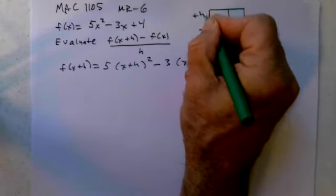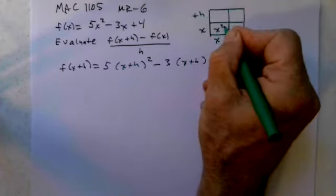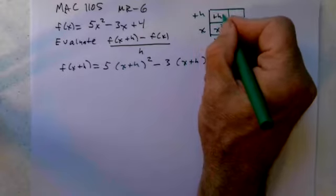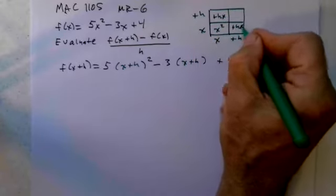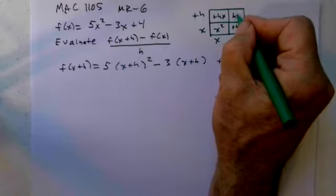Here's x plus h, x plus h. x times x is x squared. x times h plus h times x, plus hx. h times h is h squared.